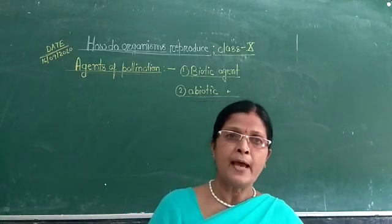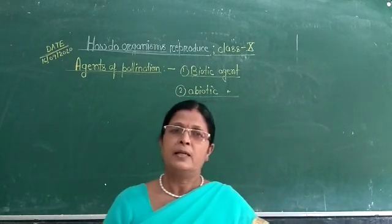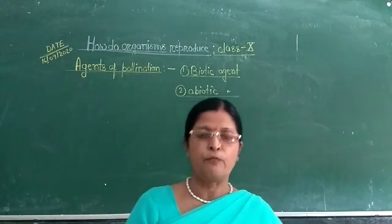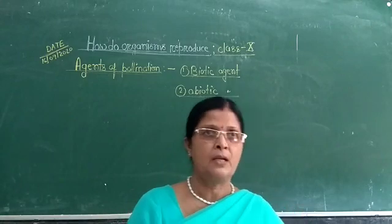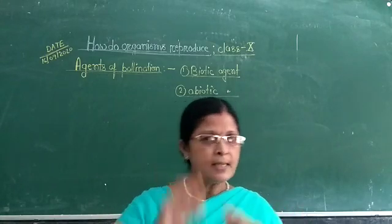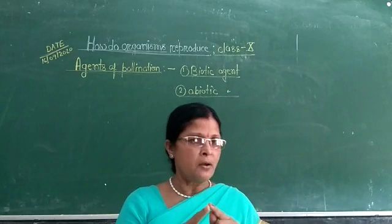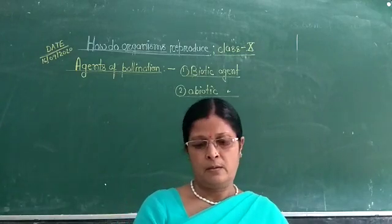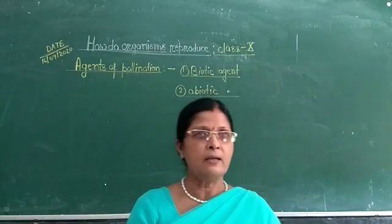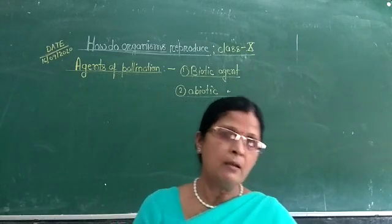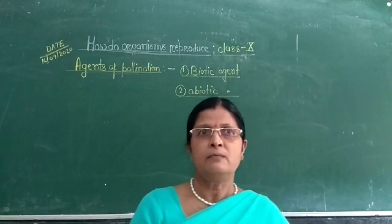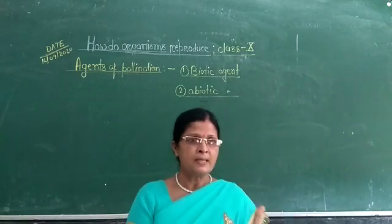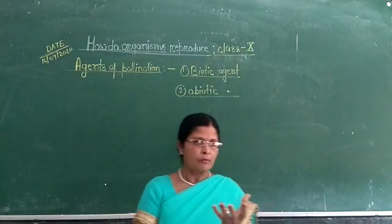We know that it is necessary for both gametes to come in contact for fertilization. But pollen grains are formed inside the anther and the egg is formed in the ovule, present at the bottom of the pistil.